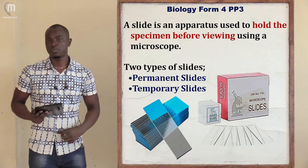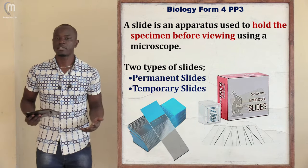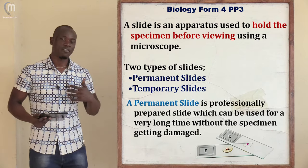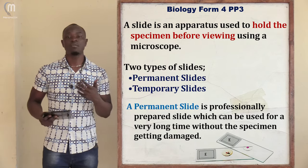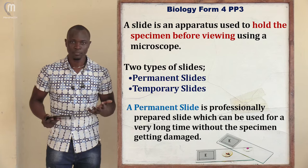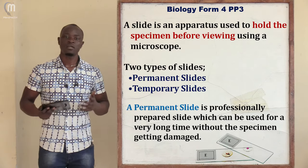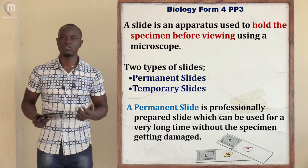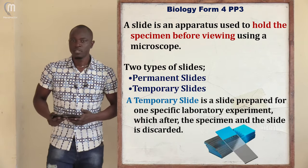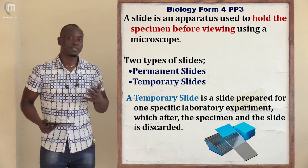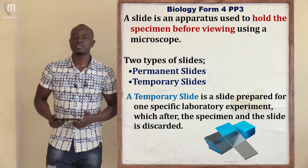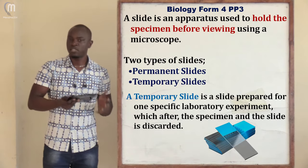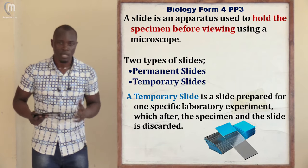In Form 1 we looked at two different types of slides. The first was a permanent slide and the other was a temporary slide. For a permanent slide, these are slides which have been manufactured in factories and can be used over a very long period of time — they are well prepared and sold to retailers such as your school, and the specimen does not get destroyed. For a temporary slide, this is a slide which is only prepared and used in a specific lesson or biology class only.